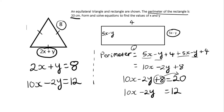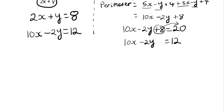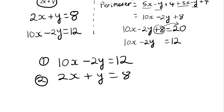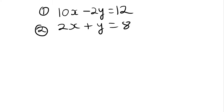Now I have formed two equations: 2x plus y equals 8, and 10x minus 2y equals 12. I'm going to label them — 10x minus 2y equals 12 as equation 1, and 2x plus y equals 8 as equation 2. I'm then going to solve these simultaneous equations in the standard way.